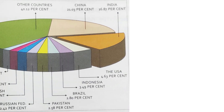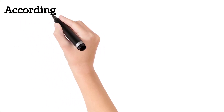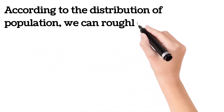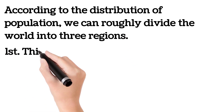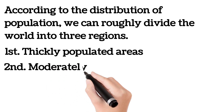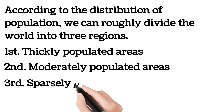Here is an image showing the distribution of population all over the world. According to the distribution of population, we can roughly divide the world into three regions: first, thickly populated areas; second, moderately populated areas; and third, sparsely populated areas.